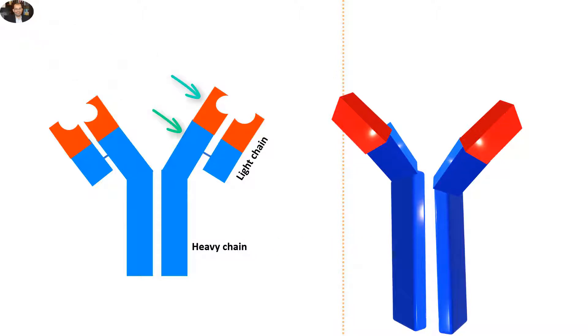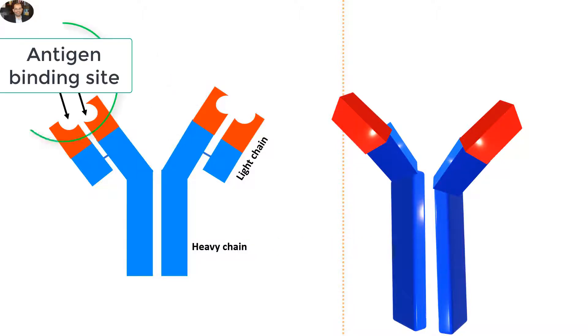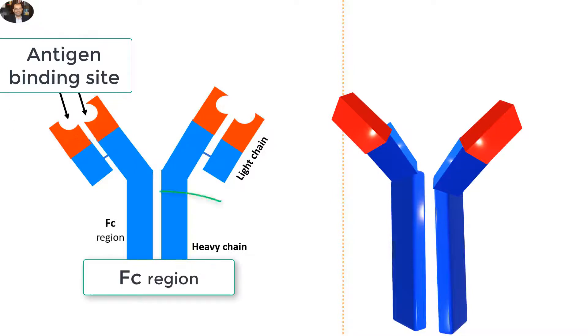The antigen binding sites are present in the light region, whereas the FC region, which binds to immune cell receptors, is present in the heavy chain region.